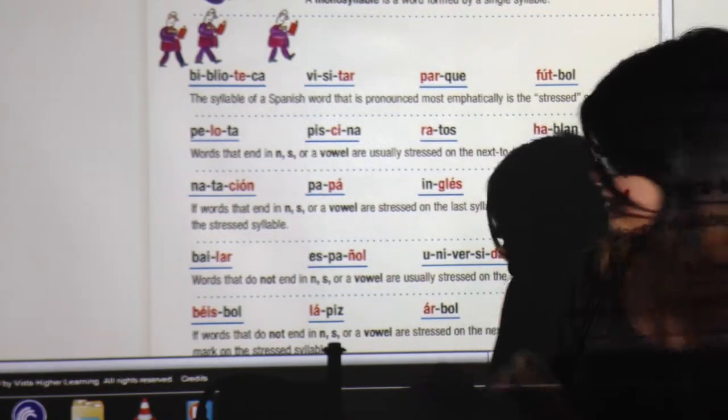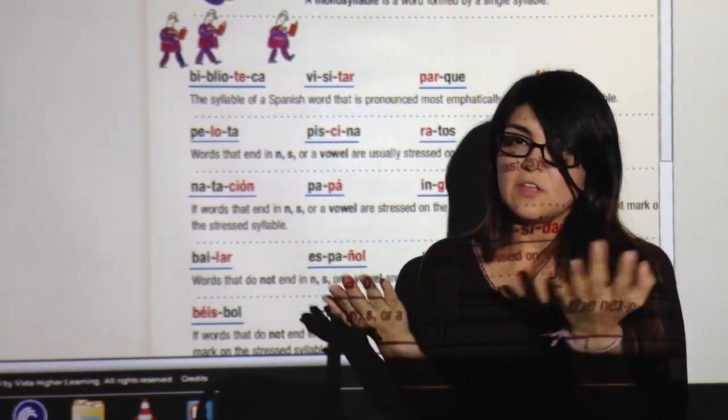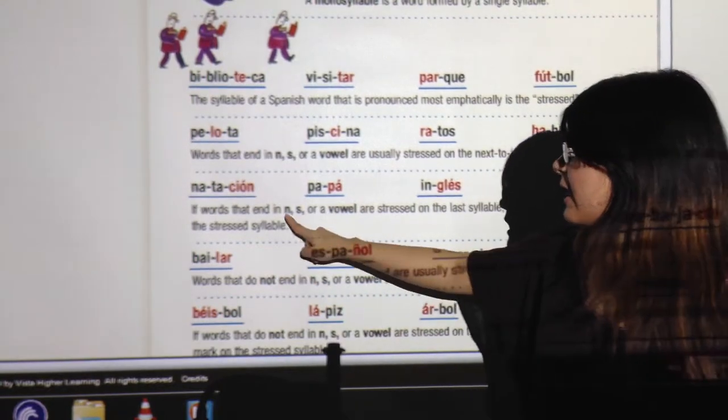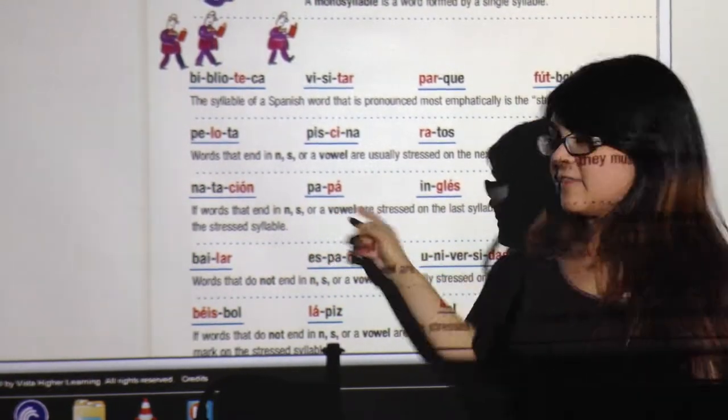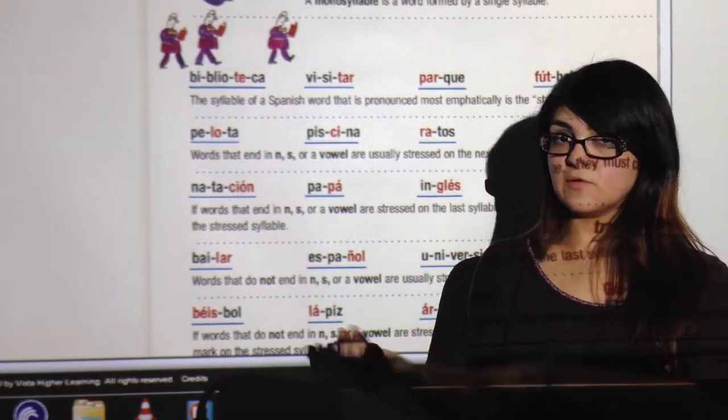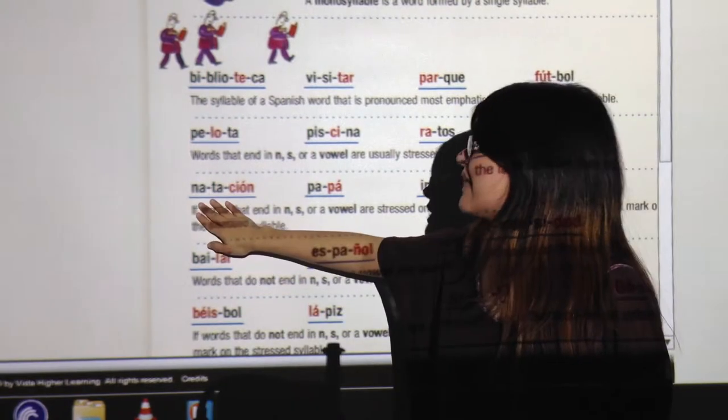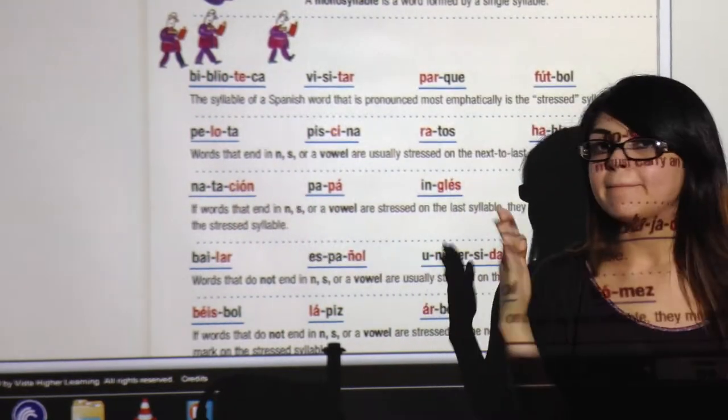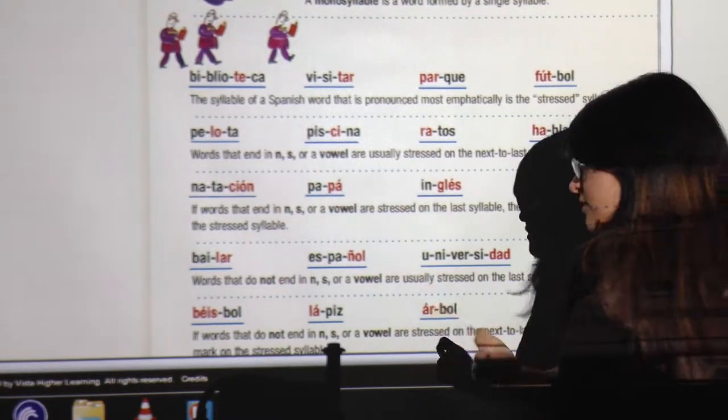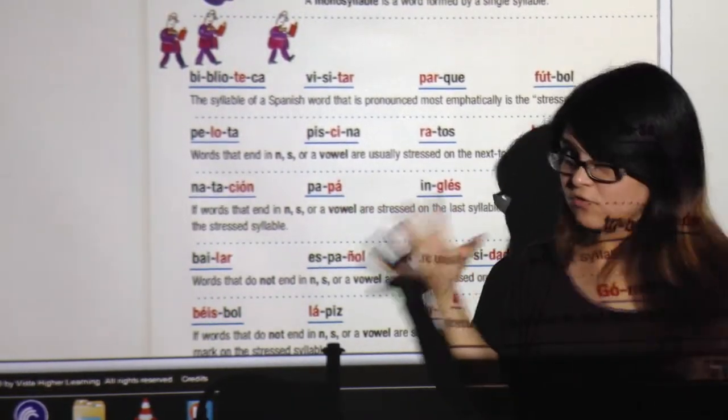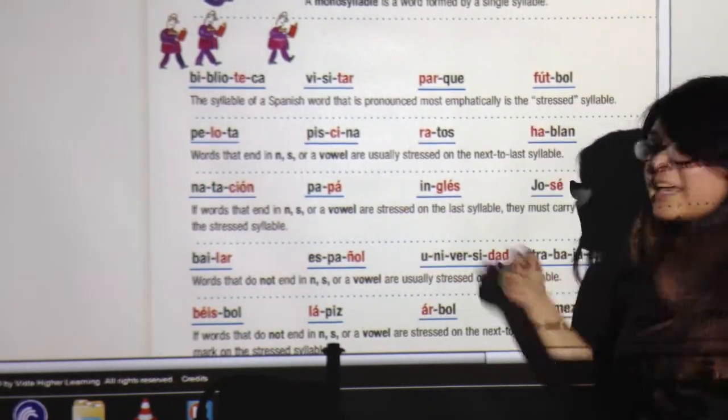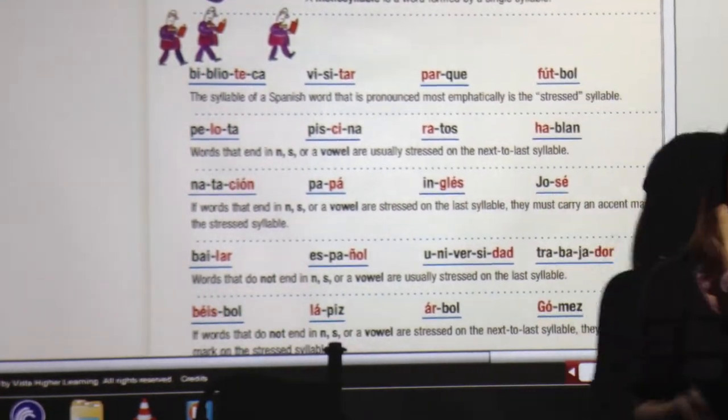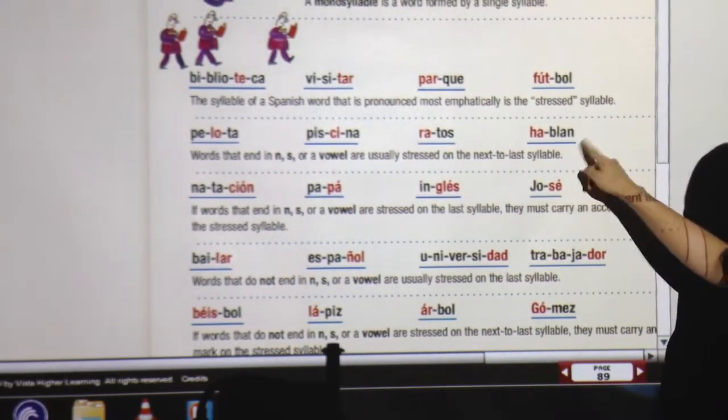But when the strong one is in the last syllable and it's ending with N, S, or a vowel, we will need a written accent. All right? So just try to memorize that. It's not that hard. It's only the N, the S, or any vowel. So whenever we have an N, S, or a vowel and the strong one falls in the last syllable, you need an accent. Natación. Natación. All right? Accent there because it's ending with N. Papá, it's ending with a vowel, so accent there. Café. All right, it's ending with a vowel but the strong one is there, so accent. Inglés. Inglés. All right? Accent because it's ending with an S. And José. José. Ending with a vowel, accent.